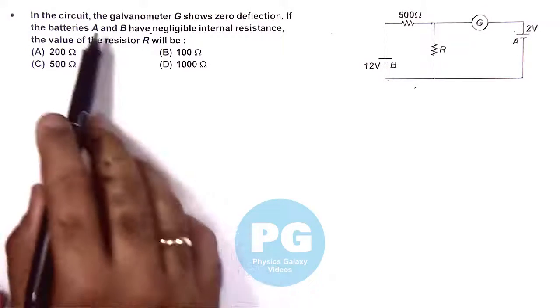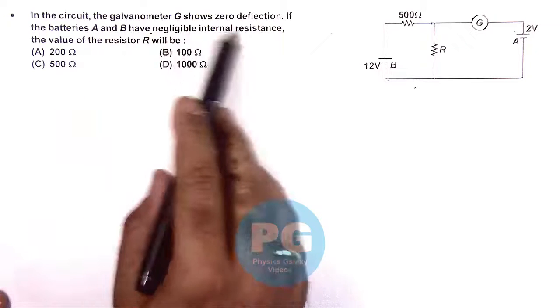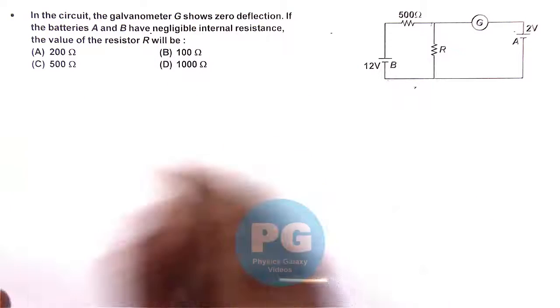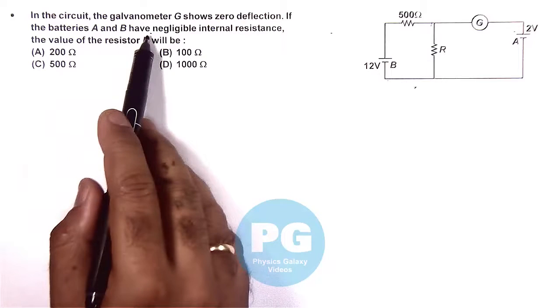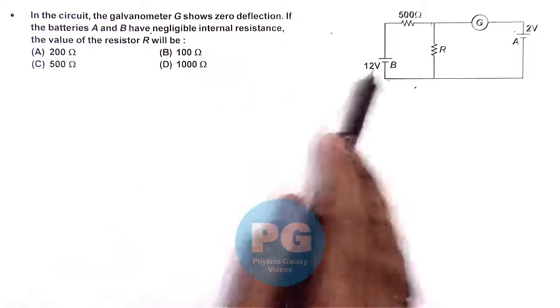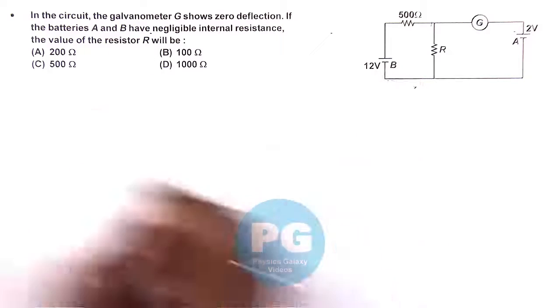In this circuit, we are given that the galvanometer G shows zero deflection. If batteries A and B have negligible internal resistances, the value of resistance R will be: